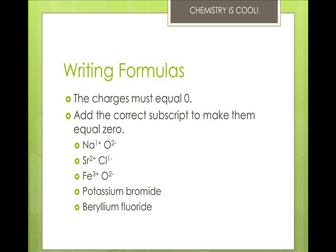For strontium and chlorine, we get SrCl2. For iron 3 and oxygen, we get those two together, and we get Fe2O3. If you notice, you take the superscript of the first one and make it the subscript of the second one, and vice versa.